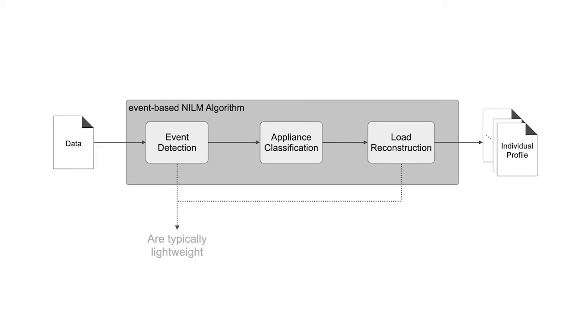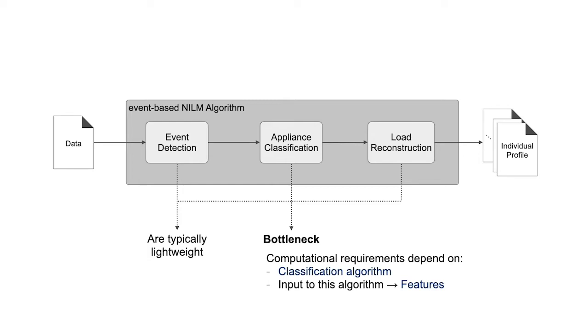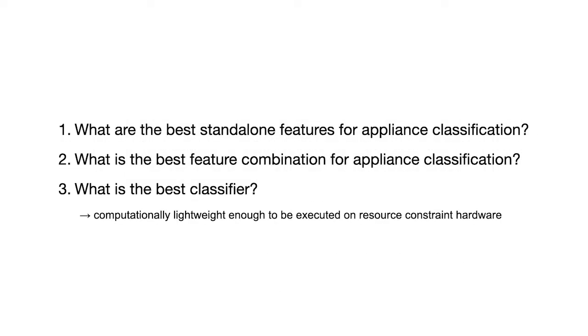Let's now look deeper into that. The event detection and load reconstruction steps are typically lightweight. The bottleneck here is actually the classification part. The number of computations depends on the specific classification algorithm which is used, but also on the input to that algorithm, meaning the features. In our work, we wanted to answer these three questions. What are the best standalone features for appliance classification? What is the best feature combination for appliance classification? And what is the best classifier? All that by keeping in mind that the algorithms should be executed on resource-constrained hardware.